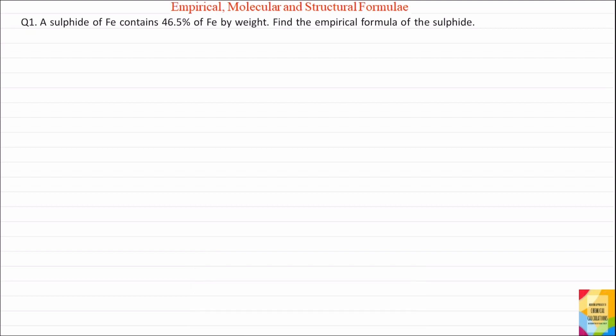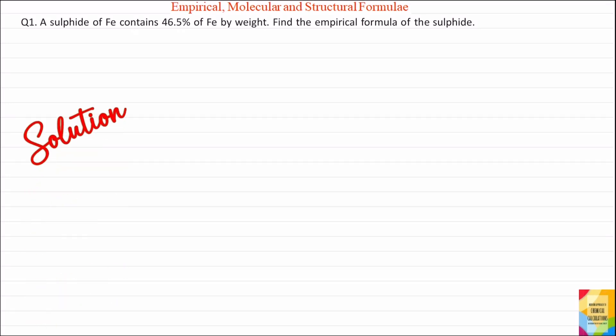Question 1. A sulphide of iron contains 46.5% of iron by weight. Find the empirical formula of the sulphide. The percentage by weight of iron is 46.5%. So, if the weight of the sulphide is 100 grams, then the weight of iron present in it is 46.5 grams.